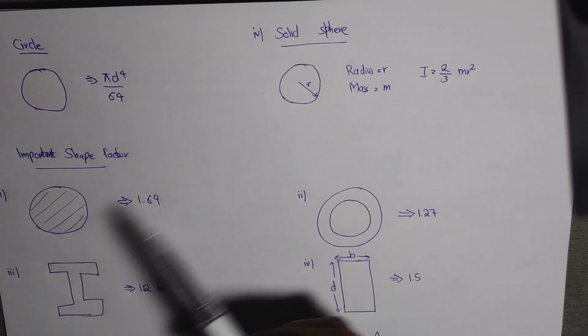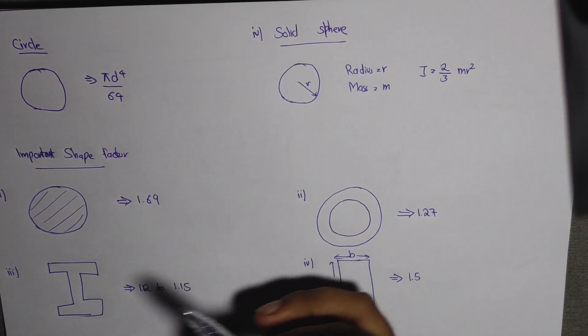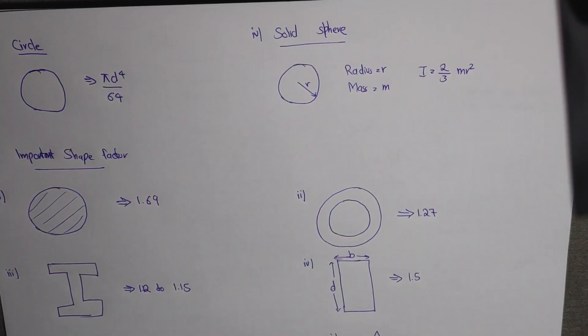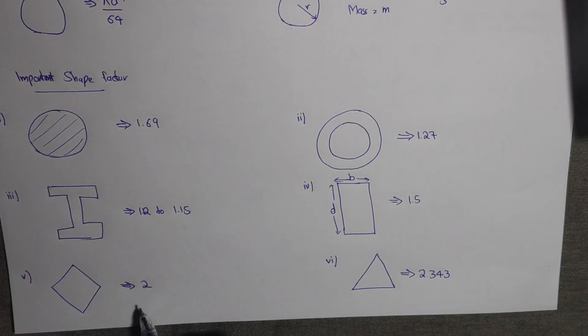The shape factor values for different cross-sections are: circle 1.69, triangle 1.5, ring 1.27, I-section 1.15, diamond 2, and triangle 2.343.